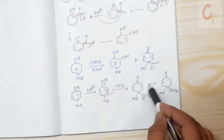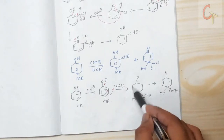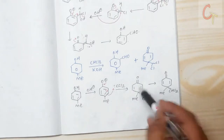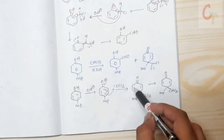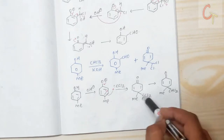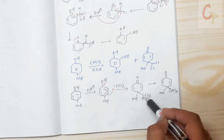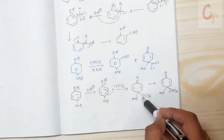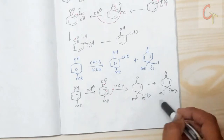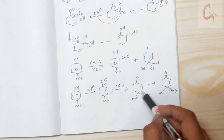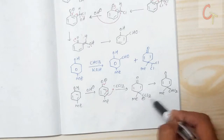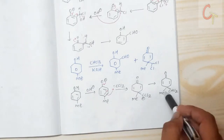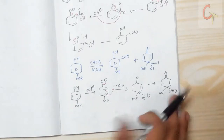This gives a quinone-type structure where oxygen has a double bond with carbon and the carbon still carries a negative charge. This intermediate abstracts a proton to re-establish aromaticity, giving the unexpected product.